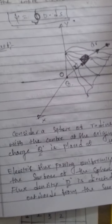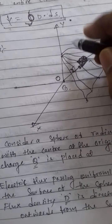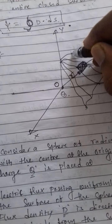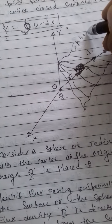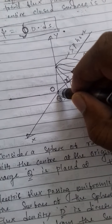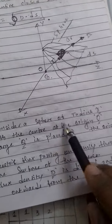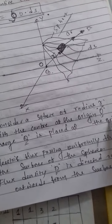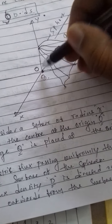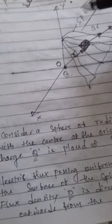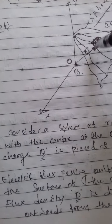Now for the proof of Gauss's Law, consider a sphere of radius r with its center at the origin. A charge Q is also placed at the origin, so the sphere encloses charge Q.